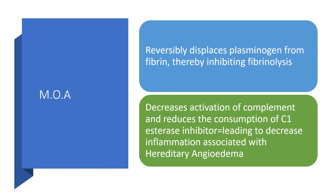Mechanism of action: tranexamic acid reversibly displaces plasminogen from fibrin, thereby inhibiting fibrinolysis — that is the primary mechanism. In hereditary angioedema, it works differently: it decreases adsorption of complement and reduces consumption of C1 esterase inhibitor, leading to decreased inflammation in hereditary angioedema.